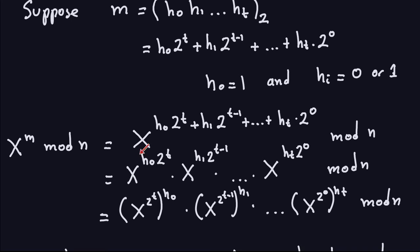Every power of x here I can rewrite using another law of exponents: x to the h0 times 2 to the t is exactly the same as (x to the 2t) all raised to the h0 power. Because when you take two powers at the same time, you multiply the exponents. The same idea applies for each term, up through h_t.